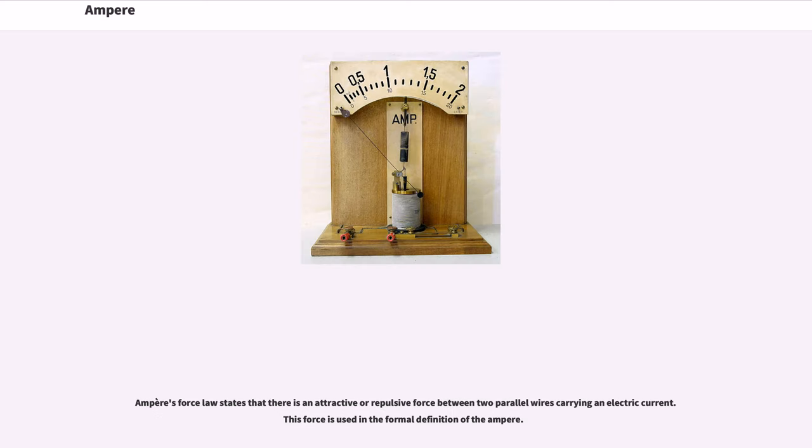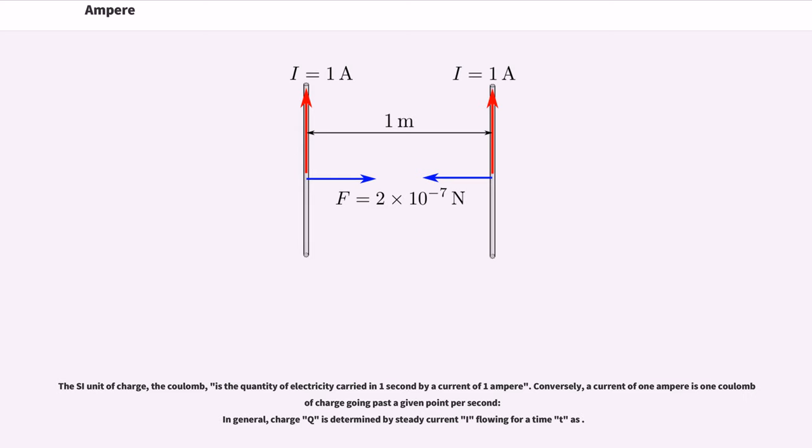Ampere's force law states that there is an attractive or repulsive force between two parallel wires carrying an electric current. This force is used in the formal definition of the ampere. The SI unit of charge, the coulomb, is the quantity of electricity carried in one second by a current of one ampere.